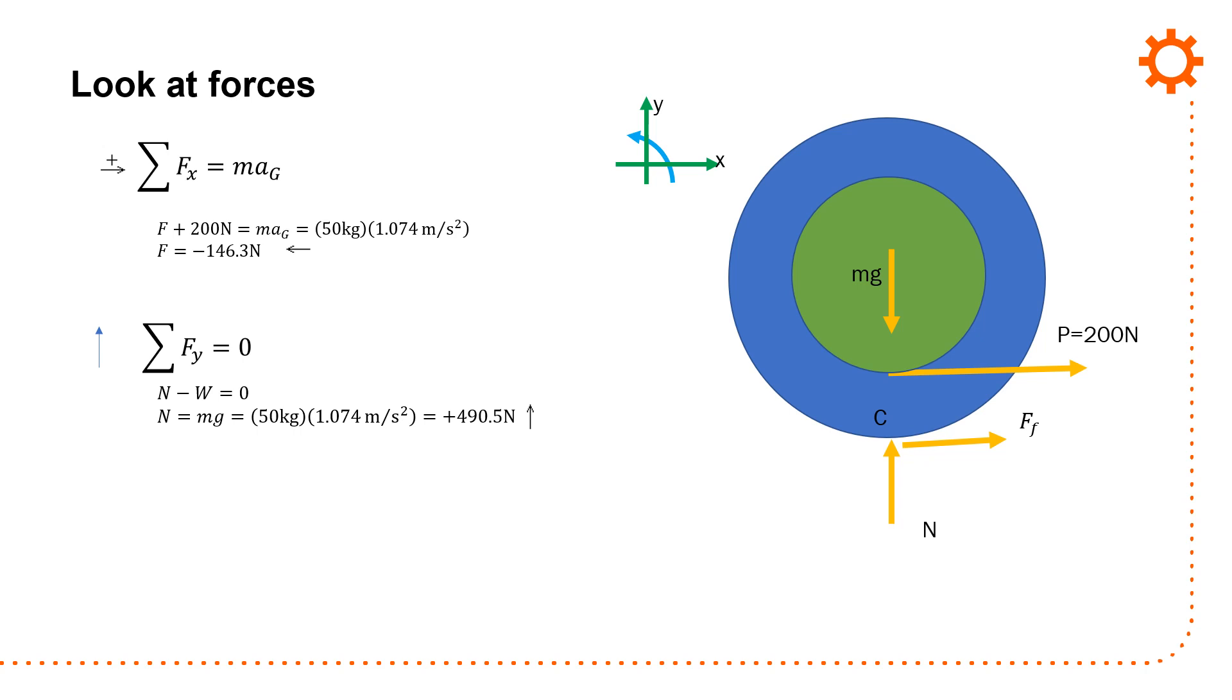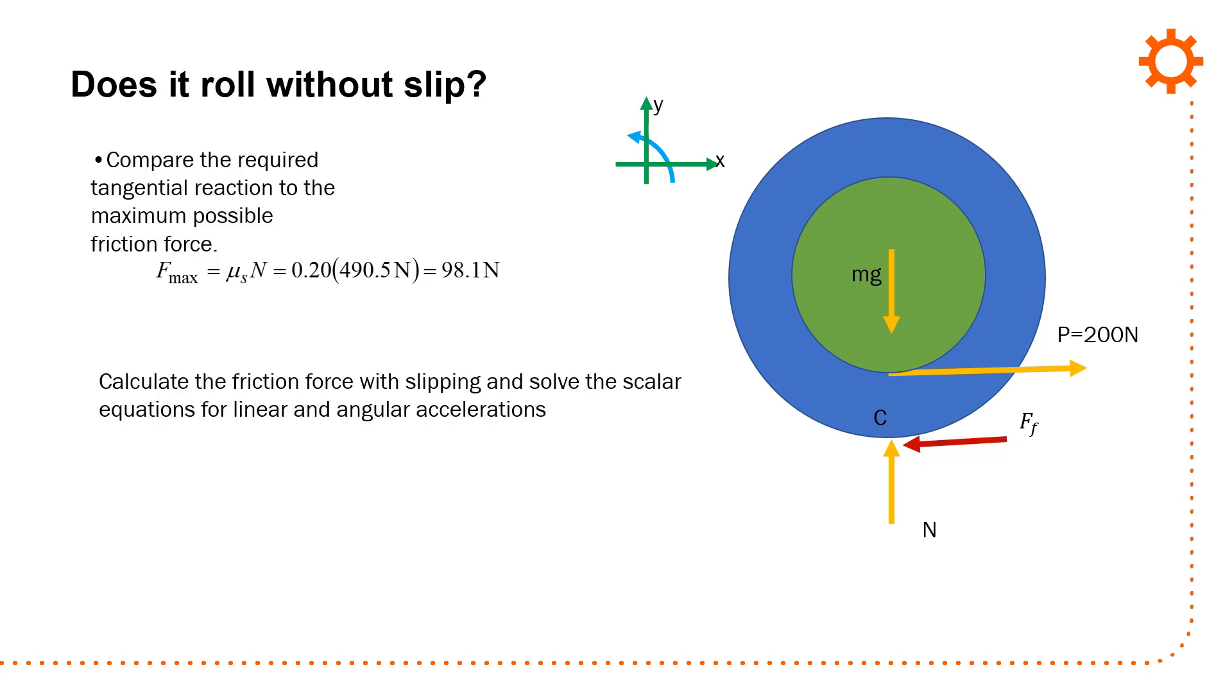If I look at the forces in x, I have force plus 200 newtons, and I get a force of minus 146.3 newtons for friction. Everything's looking good. So does it really roll without slip? If I do that, and I compare the tangential reaction to the maximum possible friction force, force max is mu sub s times n, and that's 98.1 newtons. So the force of friction that I calculated is really going to be impossible. So rolling without slip is not going to occur.